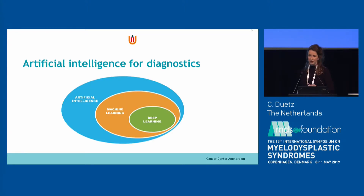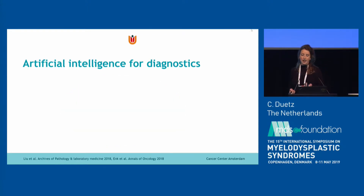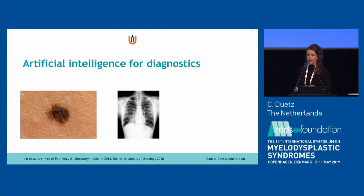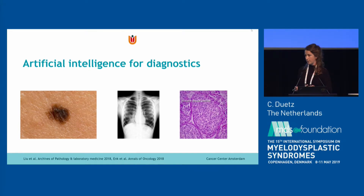Artificial intelligence is all intelligence that's not biological, and it contains things like machine learning and deep learning. It has been proven useful for diagnostics already — AI helps diagnosing melanomas better than dermatologists, recognizing pneumonia better than radiologists, and detecting invasive breast cancer better than pathologists. So we thought, why not use it for flow cytometry?